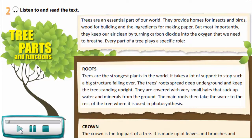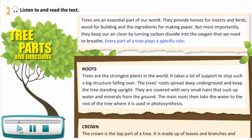Tree parts and functions. Trees are an essential part of our world. They provide homes for insects and birds, wood for building, and the ingredients for making paper. But most importantly, they keep our air clean by turning carbon dioxide into the oxygen that we need to breathe. Every part of a tree plays a specific role.